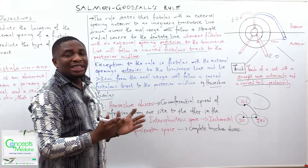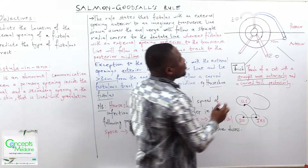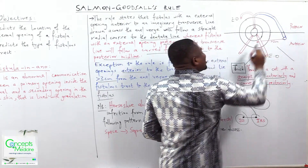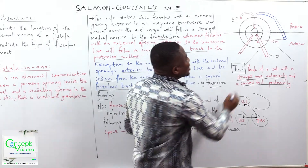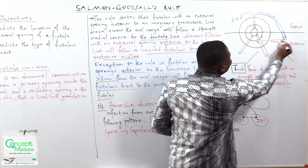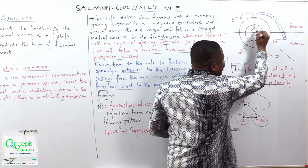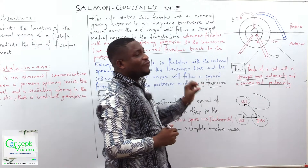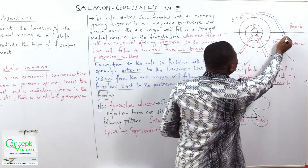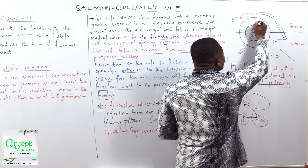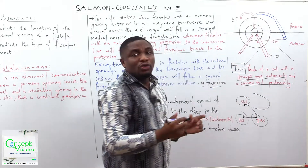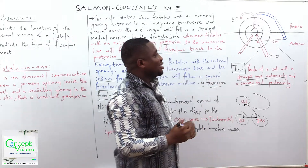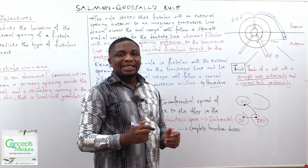Now, to the exception: if you have a fistula with an external opening anterior to the imaginary transverse line, but it is lying at a distance greater than 3 cm from the anal verge, then that anterior fistula will take a curved fistula's tract to the posterior midline, meaning that it is not following the rule for anterior fistulas. And that is what we are referring to as the exception.